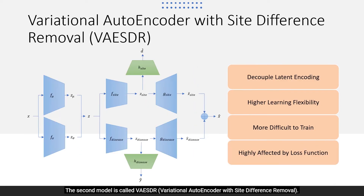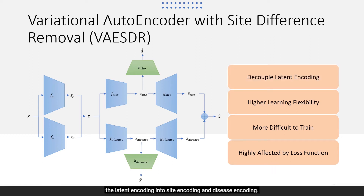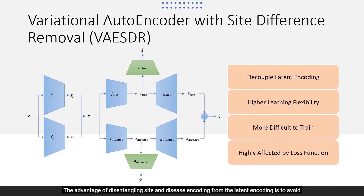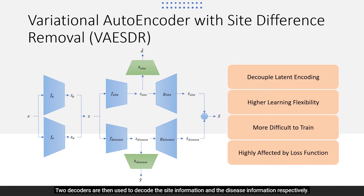The second model is called VAESDR — Variational Autoencoder with Site Difference Removal. In contrast to SHRED, VAESDR removes site effects by decoupling the latent encoding into site encoding and disease encoding. Disease classification is performed using the disease encoding, whereas site classification is performed using the site encoding. The advantage of disentangling site and disease encoding from the latent encoding is to avoid site information from influencing the disease classifier when predicting the disease labels.